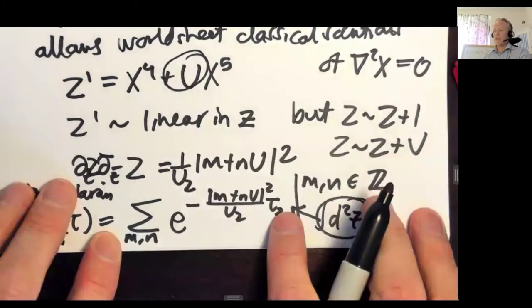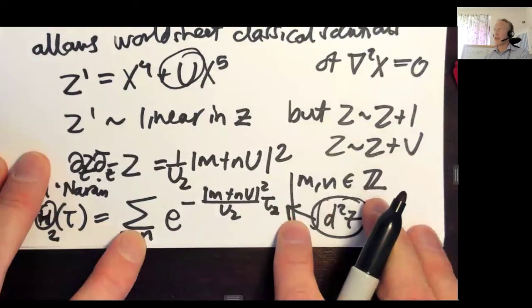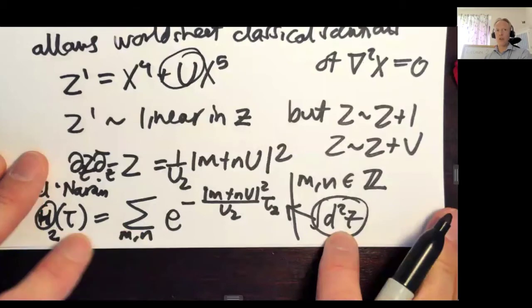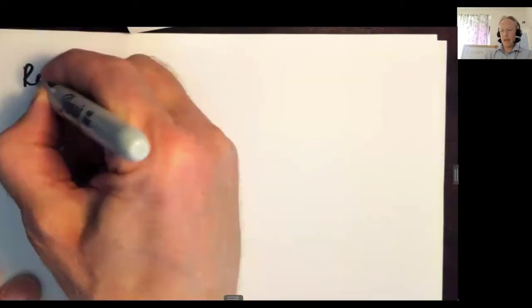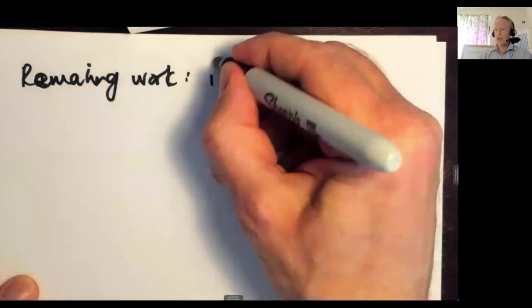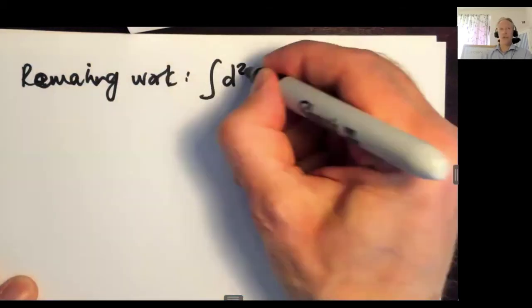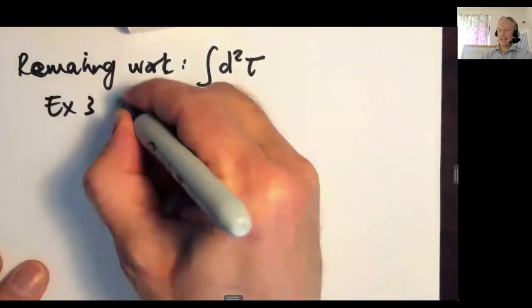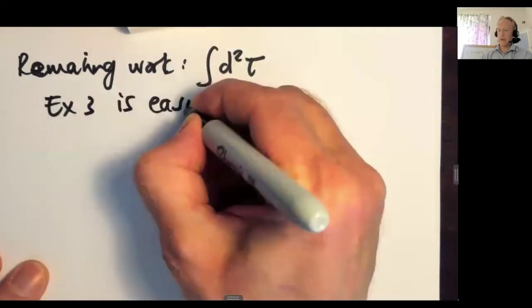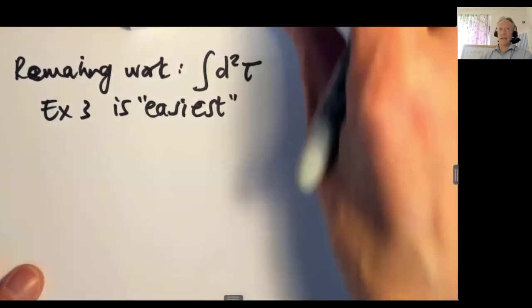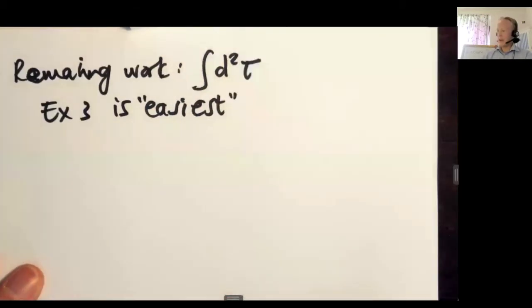And this brings me to my final point, which is that we're not done computing amplitudes just because we perform integrals over Z. We also have to do the integral over tau. The remaining work is to integrate over the world sheet parameter. Example three, in some sense, is the easiest. Of course, easy is completely subjective. But it's easiest in the sense that exponentially suppressed things are kind of nice to work with.